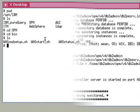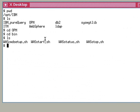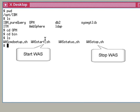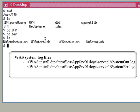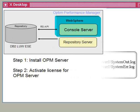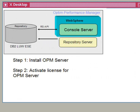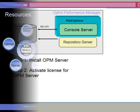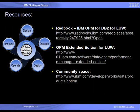In case we need to restart WebSphere Application Server in the future, the stop and start commands are located in the directory shown here. The WebSphere Application Server log can be found in the directory shown here. To summarize, we have installed the Optum Performance Manager server and activated the license. For more information about installation of Optum Performance Manager, further deployment types, or more details about the install process, refer to the redbook shown here. For more information about Optum Performance Manager product offerings and the IBM InfoSphere Optum Community, visit us on the website shown here.